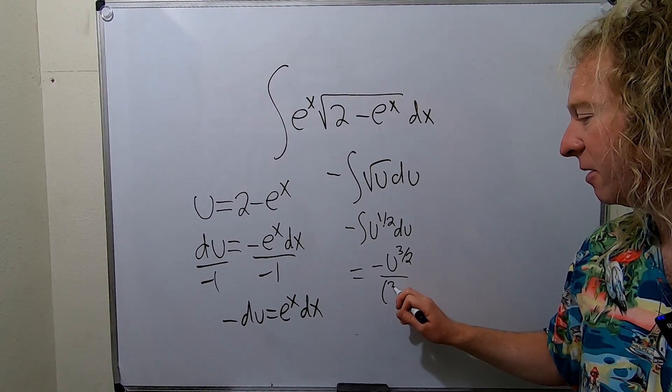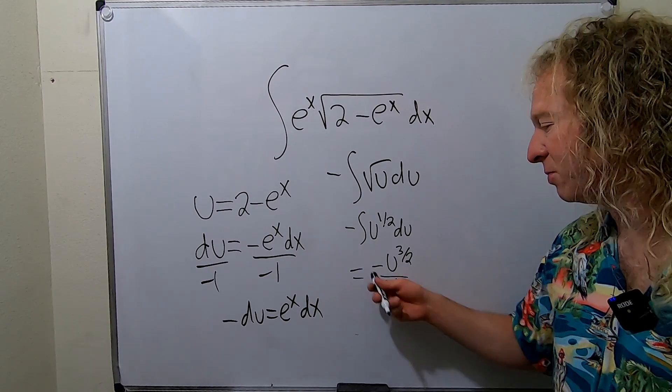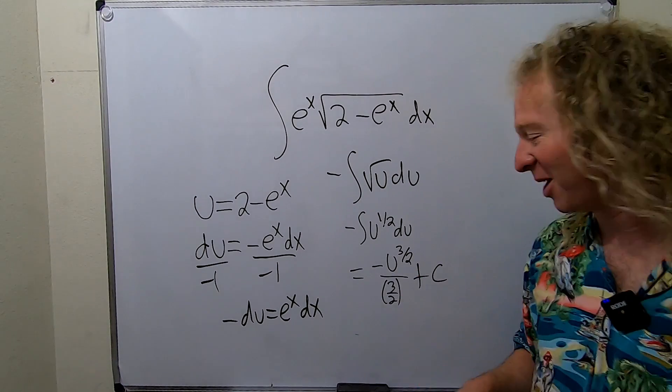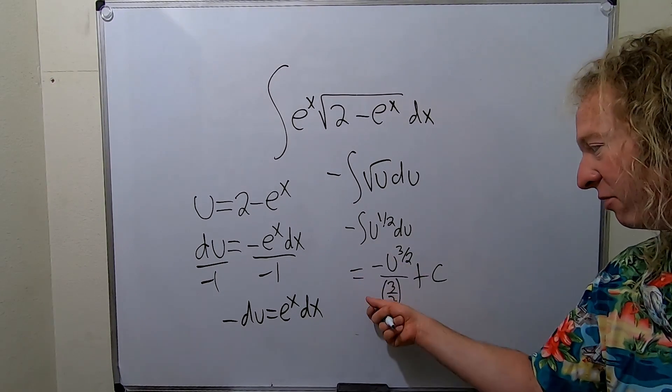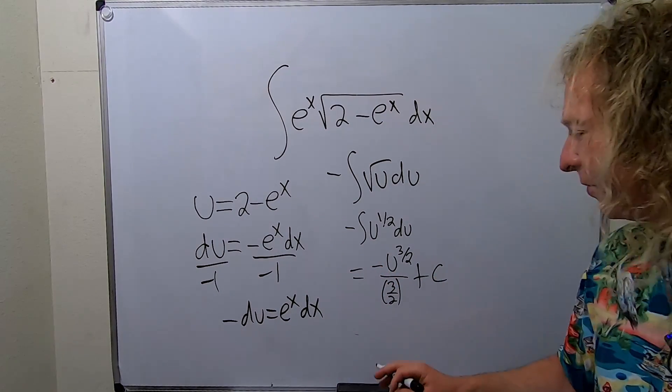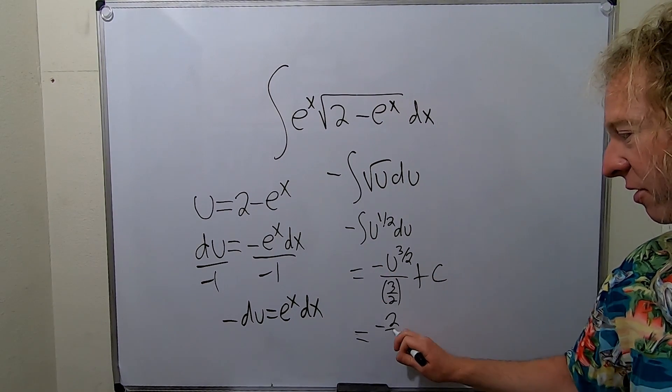And I know I usually skip a step here. When you divide by 3 halves you multiply by 2 thirds. But for some reason I didn't do it now. So you can skip a step and put 2 thirds. Whenever you divide by a fraction you multiply by the reciprocal. This is equal to, so let's flip it. So it's negative 2 thirds.